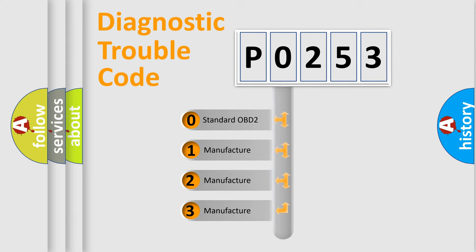If the second character is expressed as zero, it is a standardized error. In the case of numbers 1, 2, or 3, it is a manufacturer-specific error.